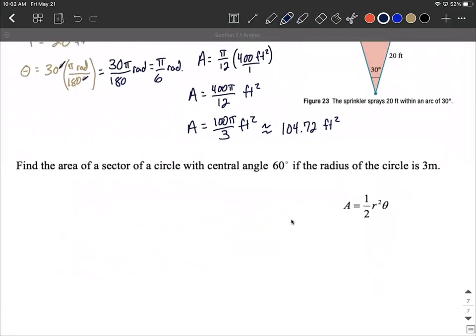Alright. One more of these. Let's go ahead and find the area of a sector of a circle with central angle 60 degrees if the radius of the circle is 3 meters.